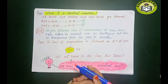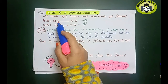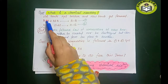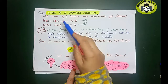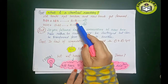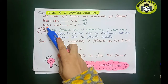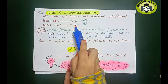What is a chemical reaction? In simple language: if any old bonds break and new bonds are formed, then it is a chemical reaction. For example, if we have molecule A₂ and molecule B₂ as reactants, they react and we get AB as product. The bond between A and A, and between B and B breaks, and a new bond is formed between A and B. Same example: H₂ and Cl₂ — old bonds break and a new bond forms between H and Cl. This is called a chemical reaction.